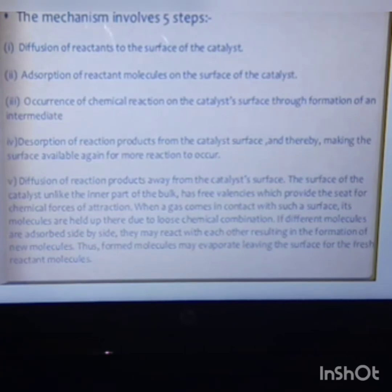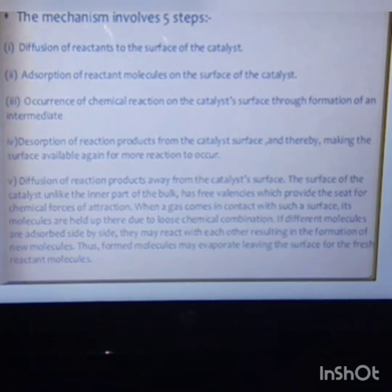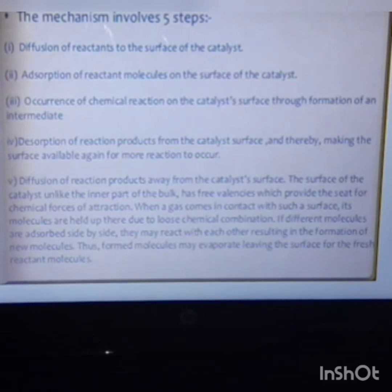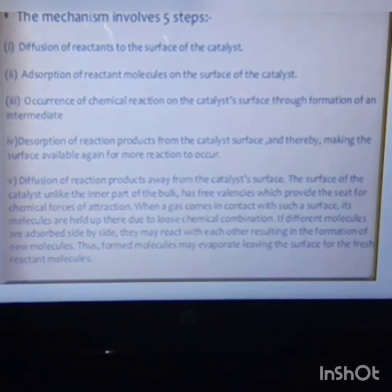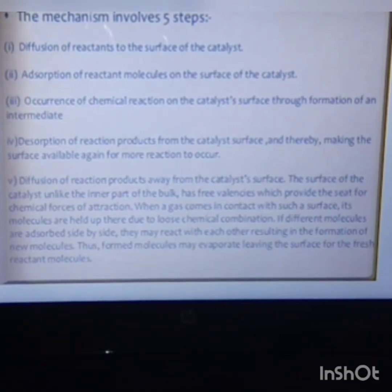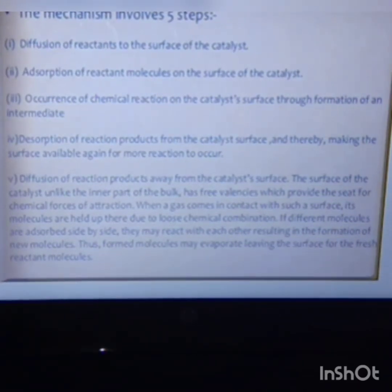The third step is the occurrence of the chemical reaction on the catalyst surface through the formation of an intermediate. The fourth step is the diffusion of product molecules away from the catalyst surface. So the reactant molecule gets adsorbed on the surface, a chemical reaction occurs at the surface forming an intermediate, and finally the product molecule is released, freeing the catalyst. These are the mechanism steps behind heterogeneous catalysis.